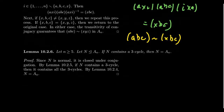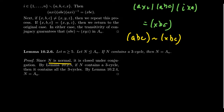Lemma 3: let n ≥ 5, and suppose N is a normal subgroup of Aₙ. If N contains a 3-cycle, then N = Aₙ. Why? Normal subgroups are closed under conjugation. By Lemma 2, all 3-cycles are conjugates of each other. So if N contains one 3-cycle, it contains all 3-cycles. But by Lemma 1, if you have all 3-cycles, you generate all of Aₙ. Therefore N = Aₙ. So every normal subgroup of Aₙ is either trivial, or if it contains a 3-cycle, it equals all of Aₙ.